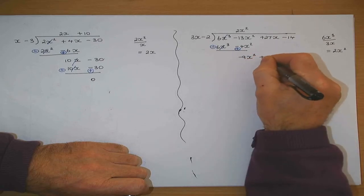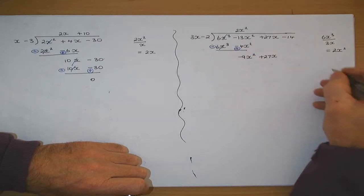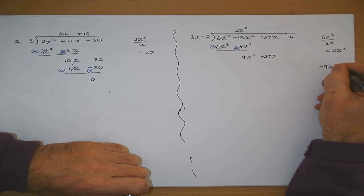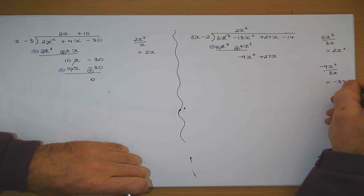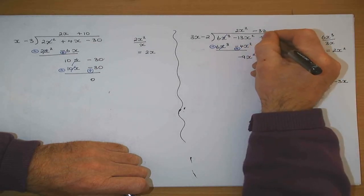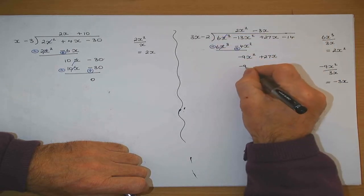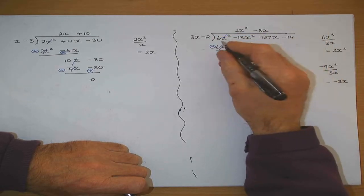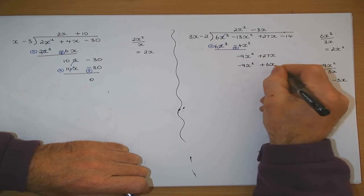And I'll bring down the 27x. 3x into that — minus 9x squared divided by 3x: 3 goes into 9 three times, so minus 3x. Minus 3x by 3x gives 9x squared, and minus 3x by minus 2 gives 6.